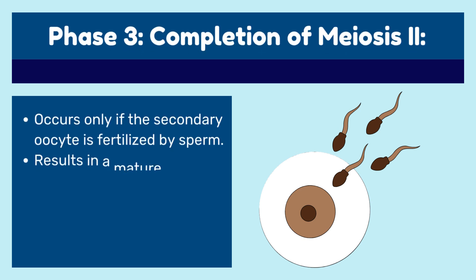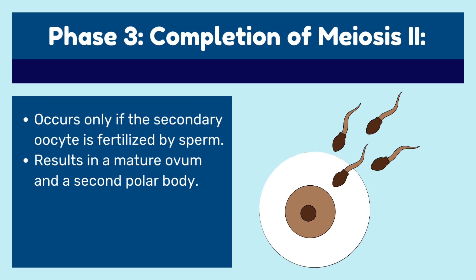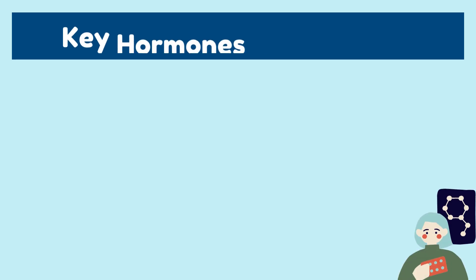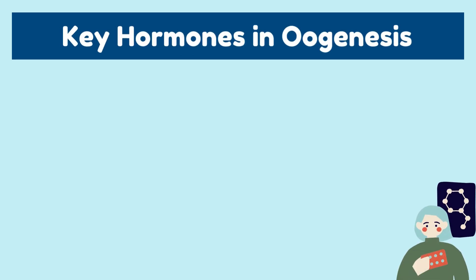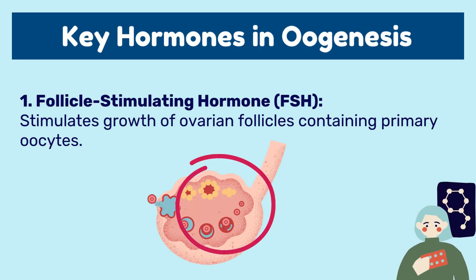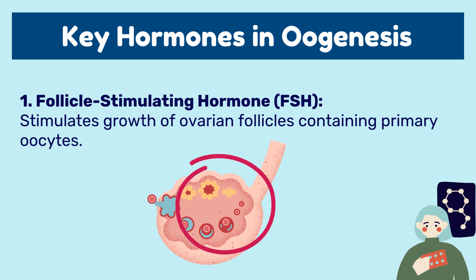Phase three is the completion of meiosis two. It occurs only if the secondary oocyte is fertilized by sperm. It results in a mature ovum and a second polar body. Now, what are the key hormones in oogenesis? Number one: follicle stimulating hormone, which stimulates growth of ovarian follicles containing primary oocytes.